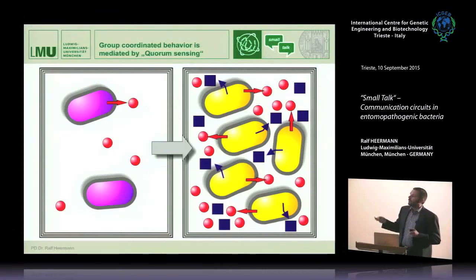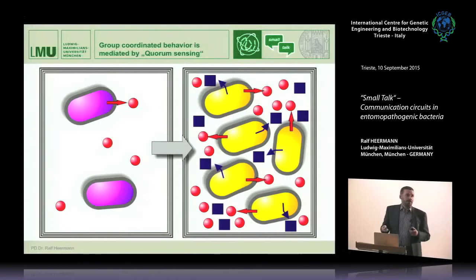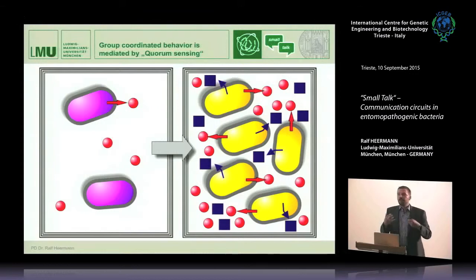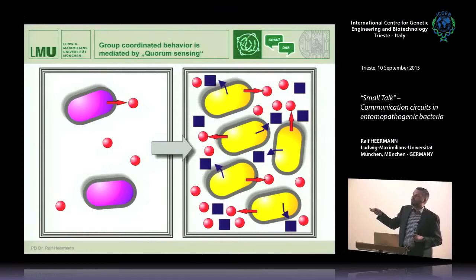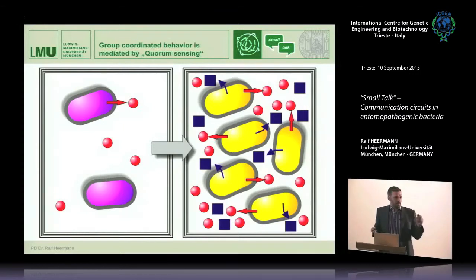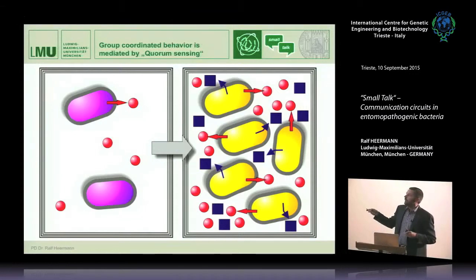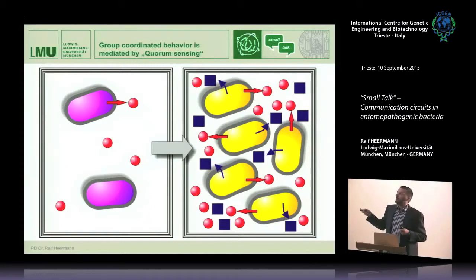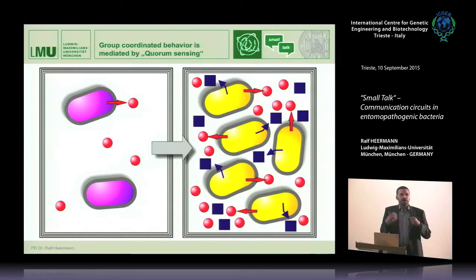This group-coordinated behavior is mediated by so-called quorum sensing. At low cell density, bacteria release small molecules into the medium constantly. When cell density increases, the concentration of these small molecules also increases. After reaching a threshold concentration, they start to produce specific phenotypic traits — it can be light, biofilm formation, toxin production, antibiotic production, everything you can imagine.